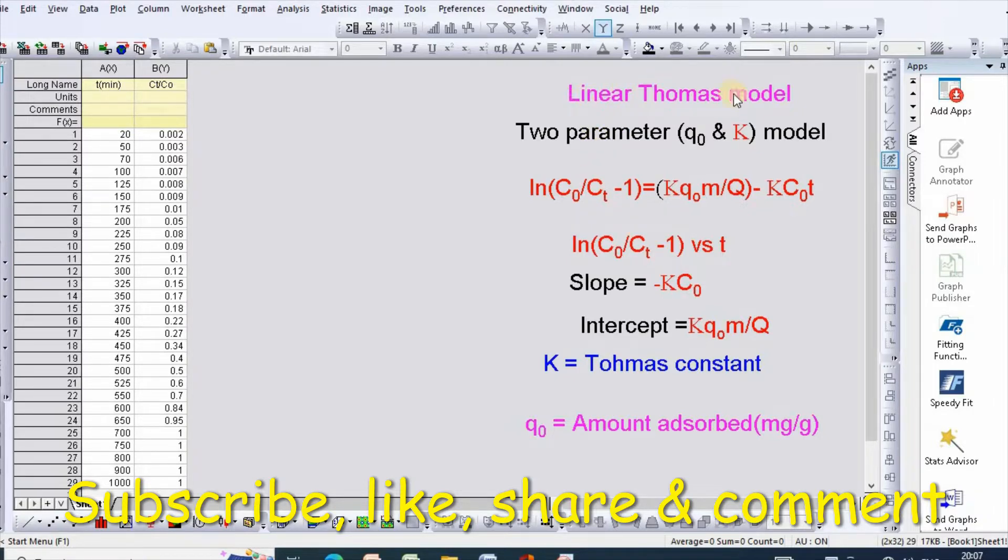Linear Thomas model is a two-parameter column adsorption kinetics model, and the equation can be written as ln(C0/Ct - 1) = (k·q0·m)/Q - k·C0·t.